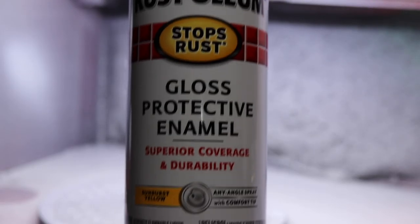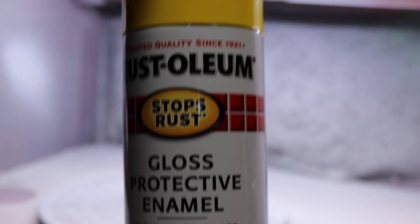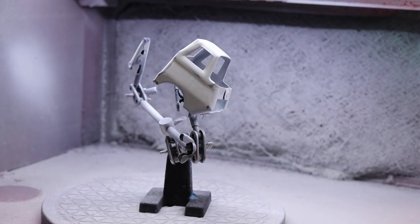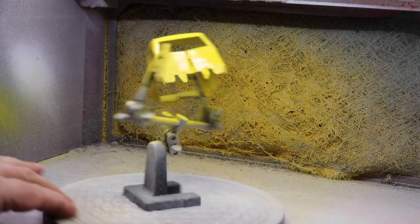Time to paint. We're going to use this Rust-Oleum Sunburst Yellow. It's very close to the Tonka Yellow, at least from my research. From what I can tell, it's spot on, so we're just going to go with it.